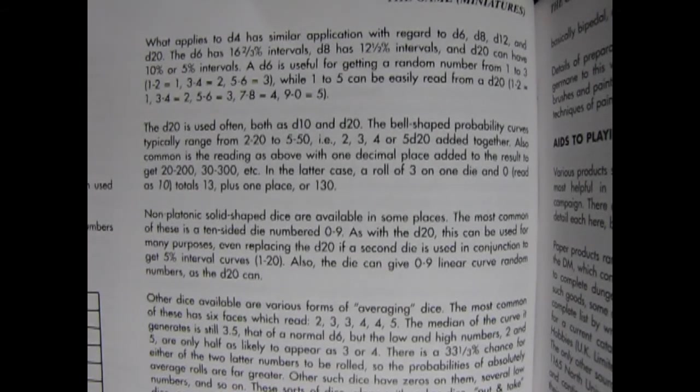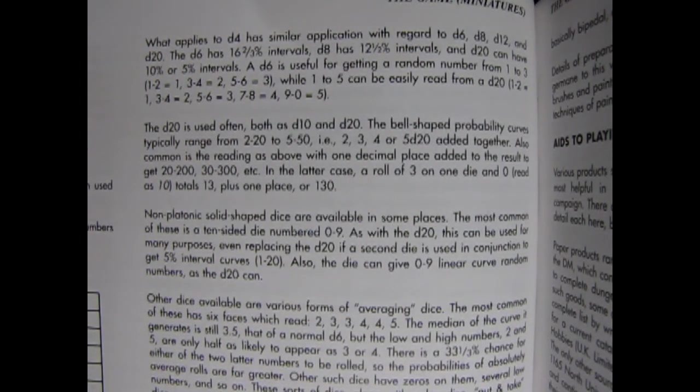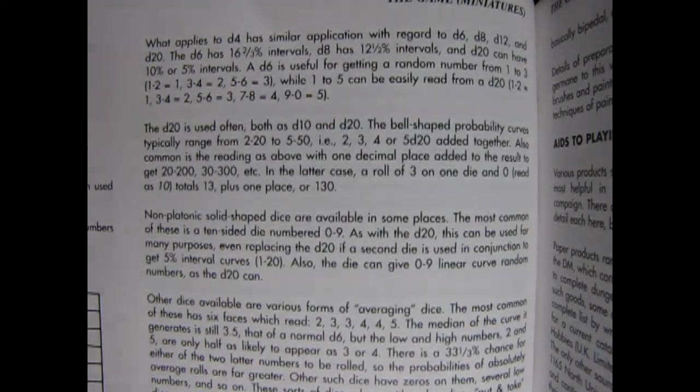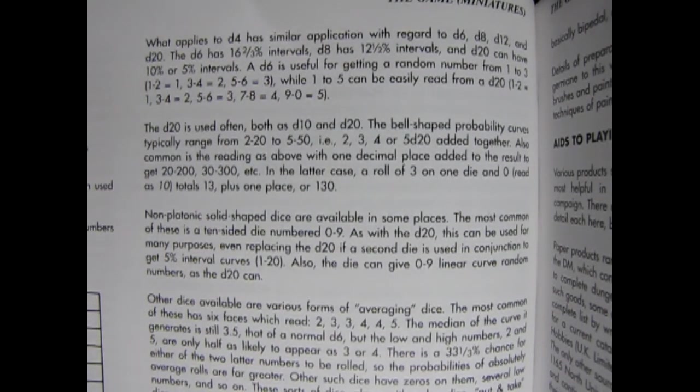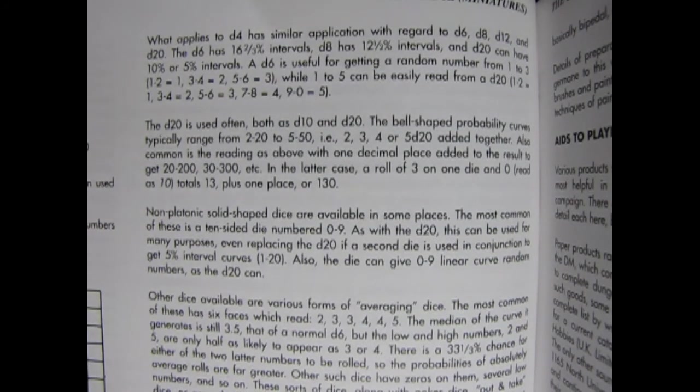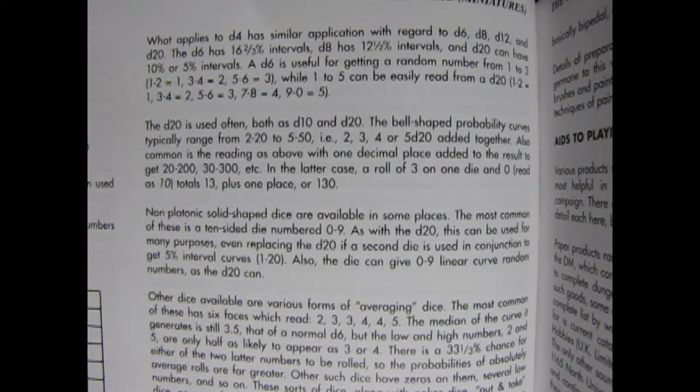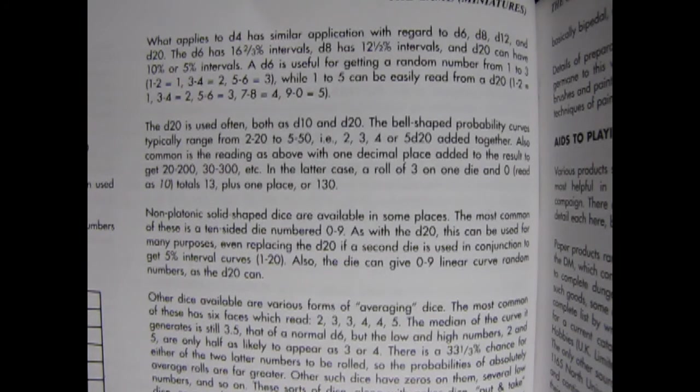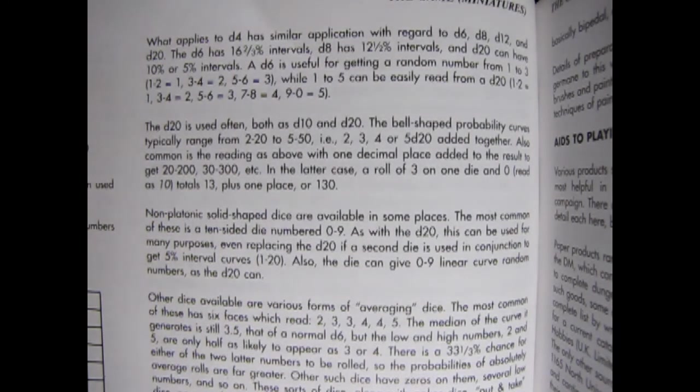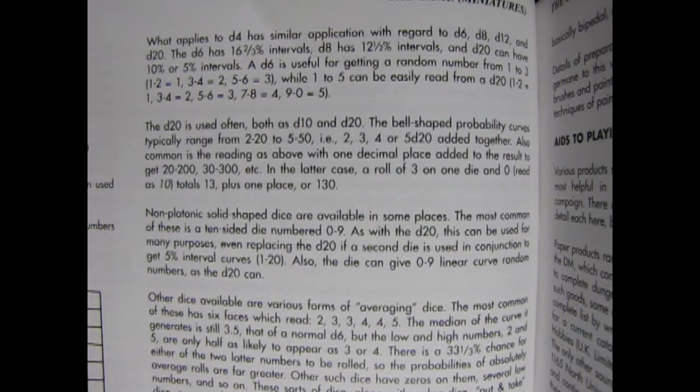What applies to D4 has similar application with regard to D6, D8, D12, and D20. The D6 has 16 and two-thirds intervals, D8 has 12 and a half intervals, and D20 can have 10% or 5% intervals. A D6 is useful for getting a random number from 1 to 3: 1 to 2 equals 1, 3 to 4 equals 2, and 5 to 6 equals 3. While 1 to 5 can be easily read from a D20: 1 to 2 equals 1, 3 to 4 equals 2, 5 to 6 equals 3, 7 to 8 equals 4, and 9 to 0 equals 5.